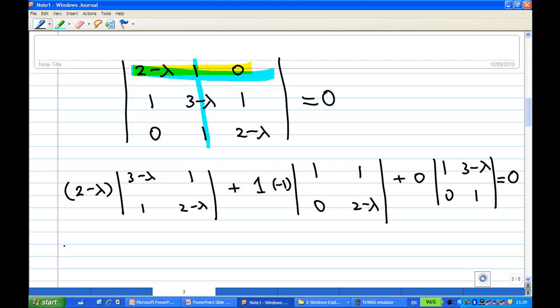For a 2 by 2 determinant, this is (3-λ)(2-λ) minus 1, minus (2-λ), and the last term is 0.